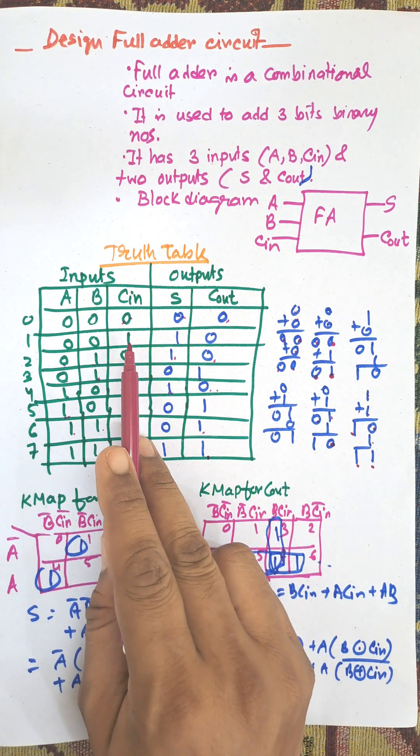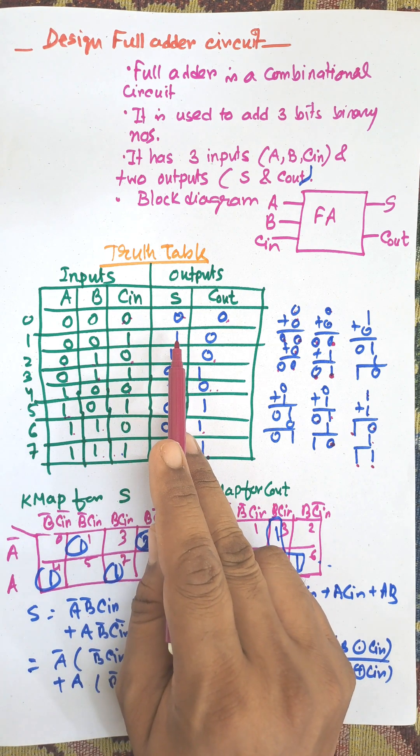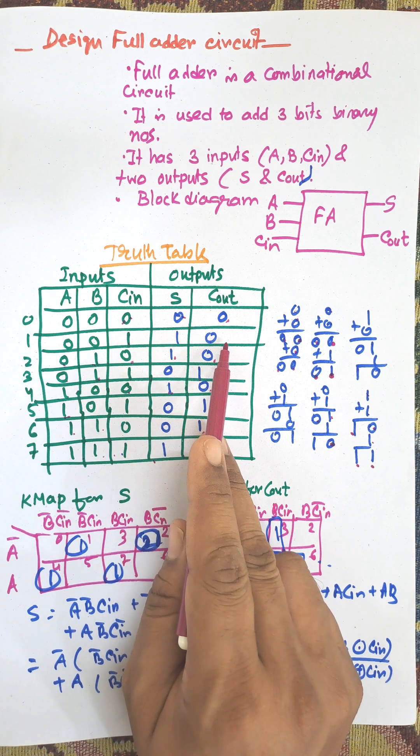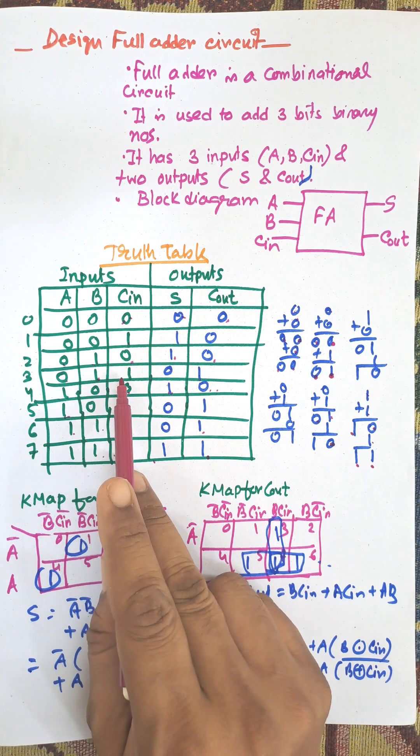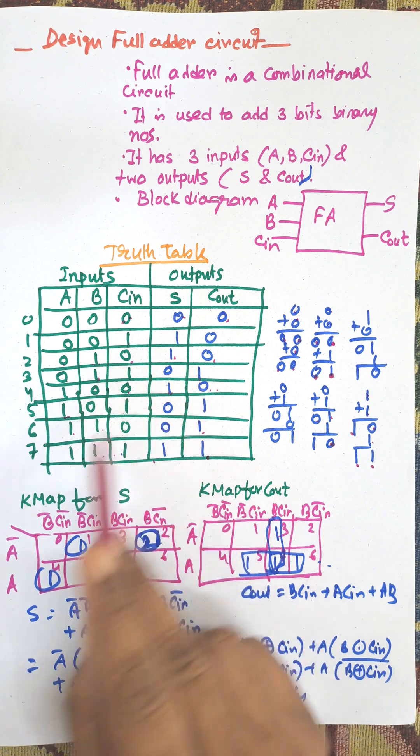Remember that for only 1 input combination, output will be sum 1, carry 0. For 2 high input variables, sum 0, carry 1. For 3 high inputs, sum 1, carry 1.